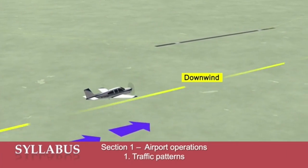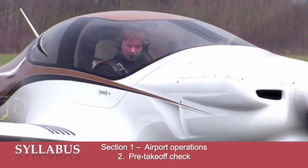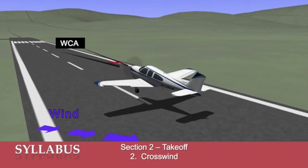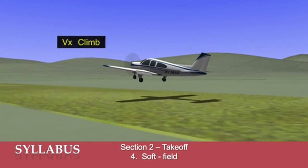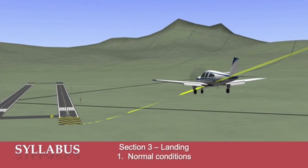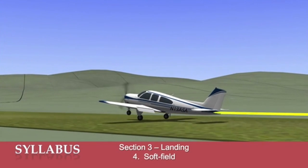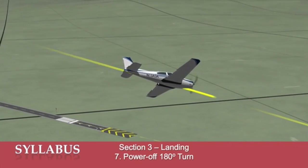This course is organized into seven sections made up of 28 individual lessons. Section 1 covers airport operations, including traffic patterns and pre-takeoff checks. Section 2, the takeoff phase, covers normal conditions, crosswind, short field, and soft field takeoff. Section 3, the all-important landing section, covers normal conditions, crosswind, short field, soft field, forward slip, go-around, and the power-off 180 degree turns.